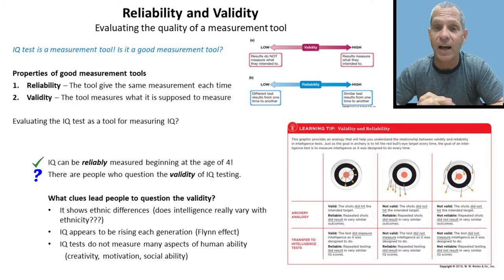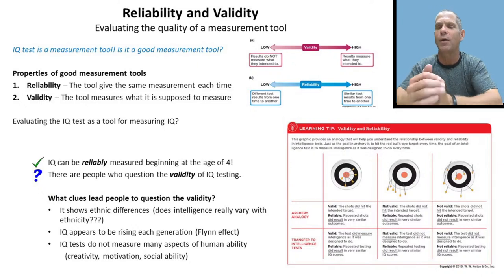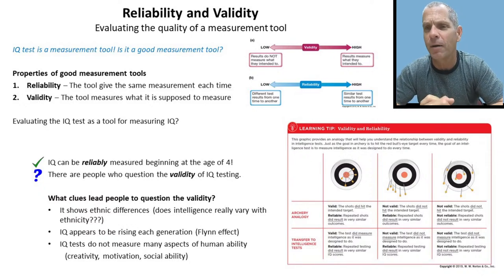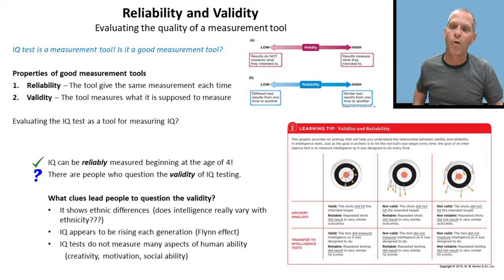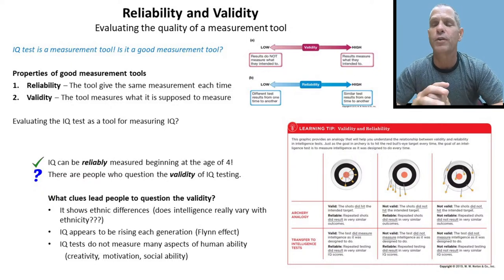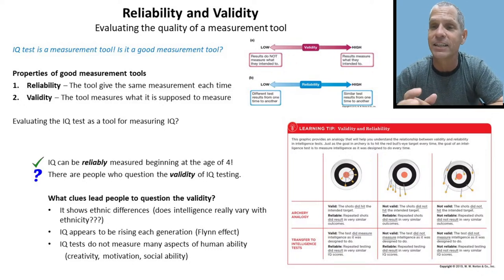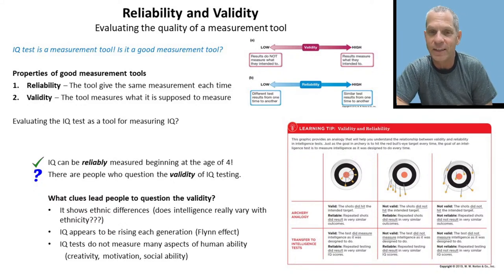One concern about validity: IQ tests do show ethnic differences. These tests were originally designed by white Europeans, and they show systematic biases against people of color — African Americans and Hispanics. It turns out that if you give tests more based on math abilities, these differences among ethnic groups tend to go away. Some people argue that testing people using language may contain cultural bias.